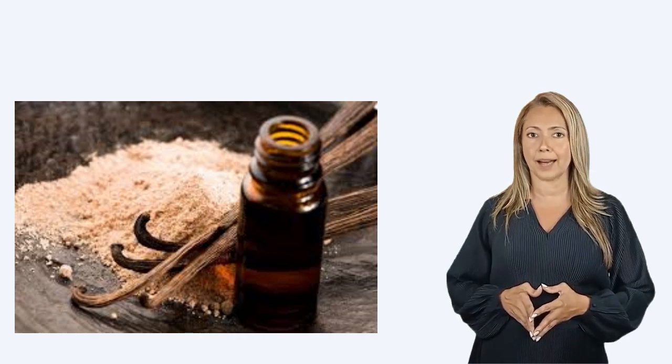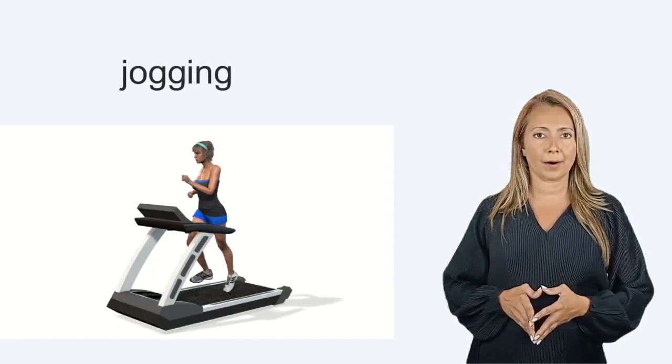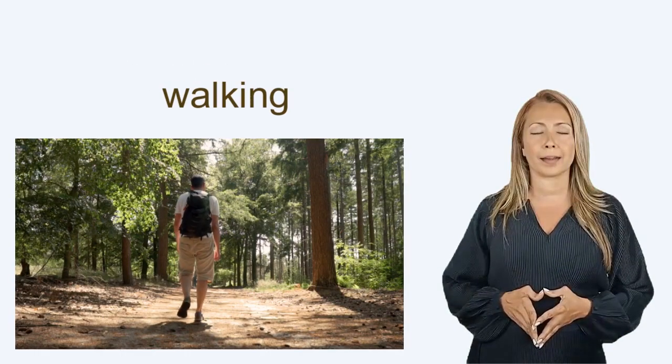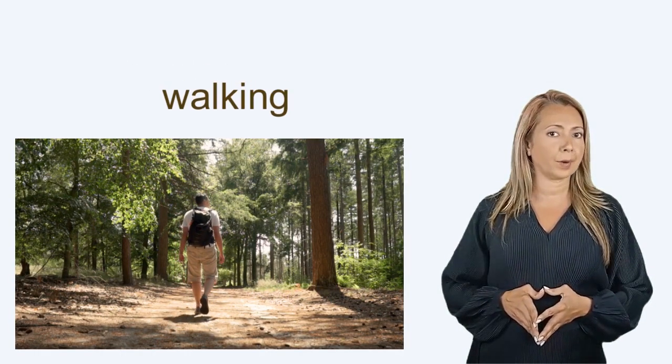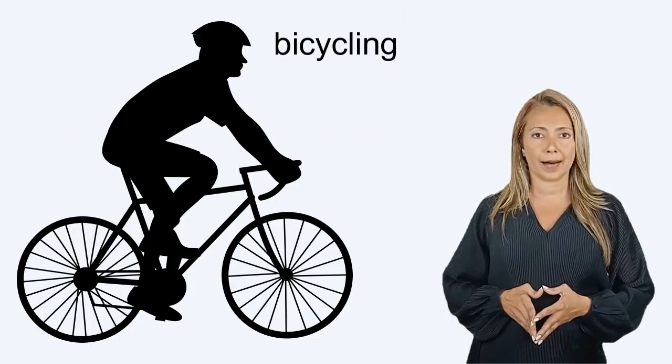Jogging at 5 miles per hour: 33 minutes. Walking, 15-minute mile: 62 minutes. Bicycling: 31 minutes.